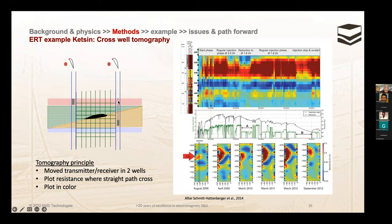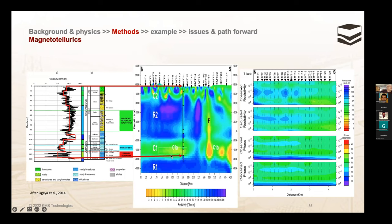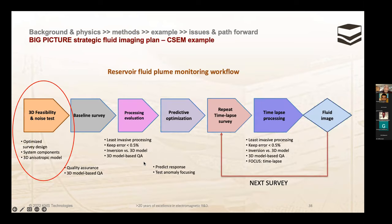ERT measurements done between 2008 and 2012 at various injection stages show the CO2 plume moving and shrinking, but this is very shallow and not very practical. The second example from Spain uses magnetotellurics — the 2D image shows the CO2, but the log and interpretation don't match very well. When comparing resistivity and inversion resistivity with calculated resistivity, there is a fairly decent match but not the accuracy required. Even with these positive results, the authors concluded that CSEM should be done.